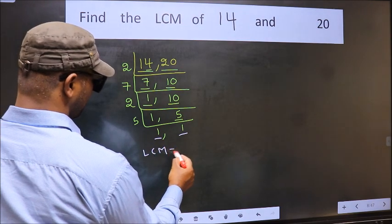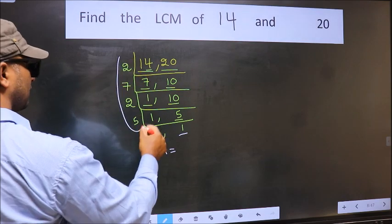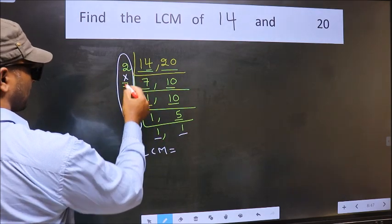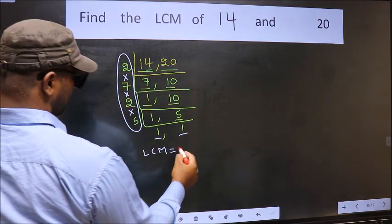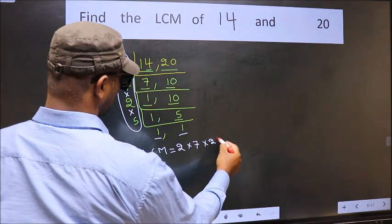So our LCM is, LCM is the product of these numbers. That is 2 into 7 into 2 into 5.